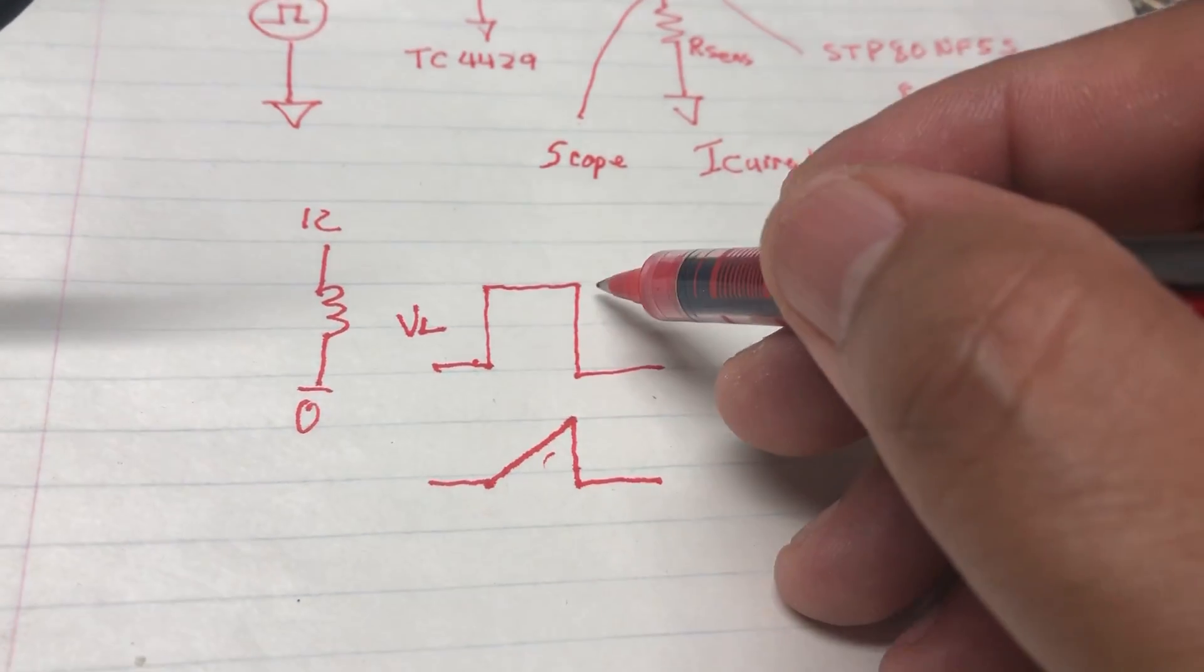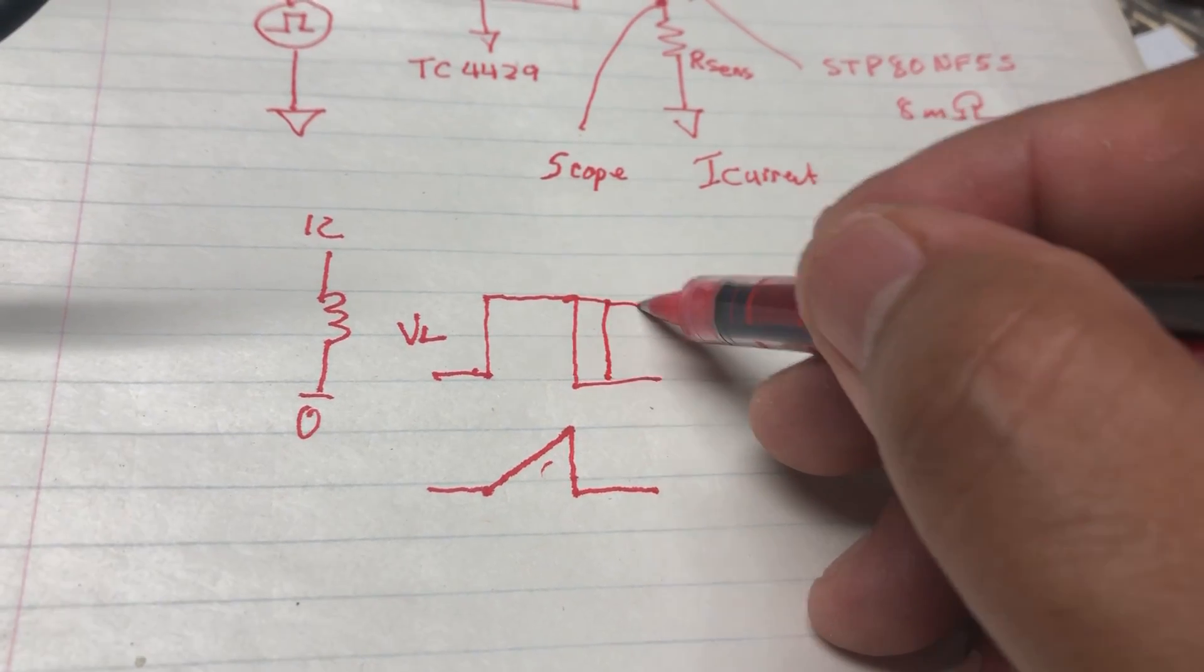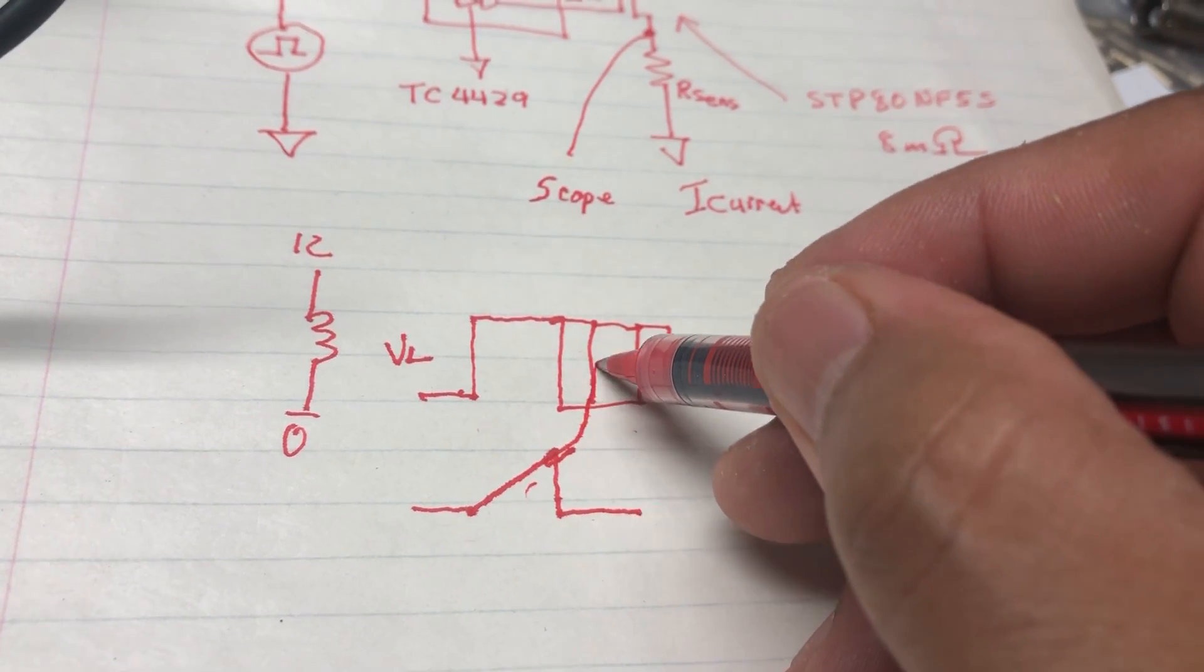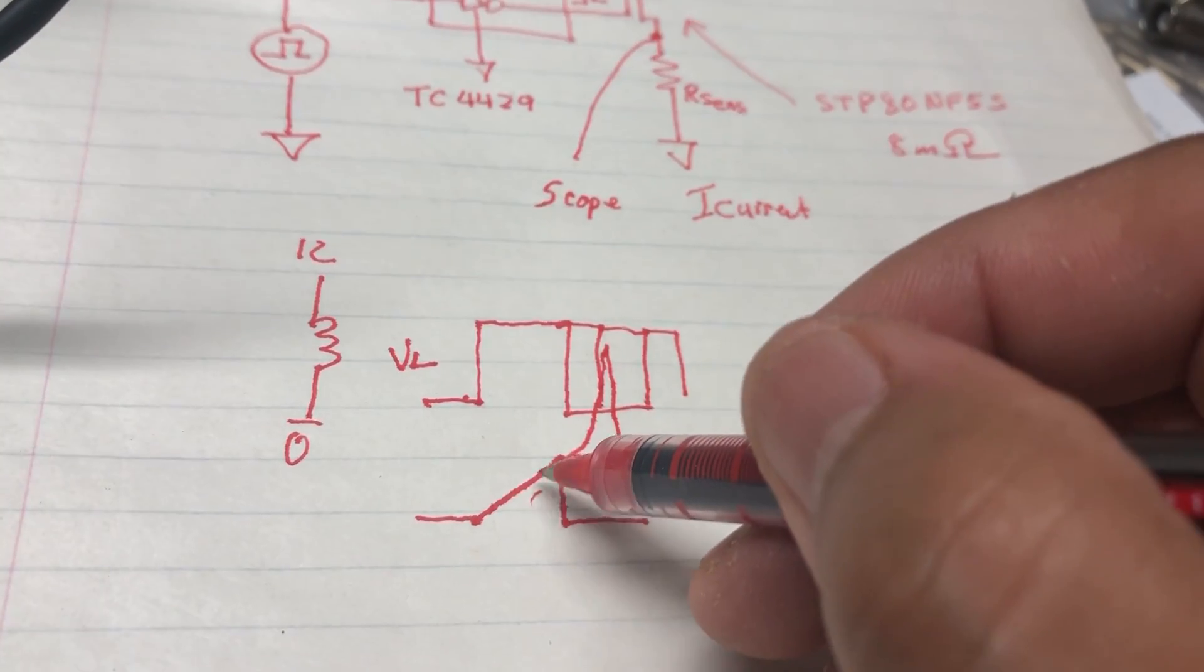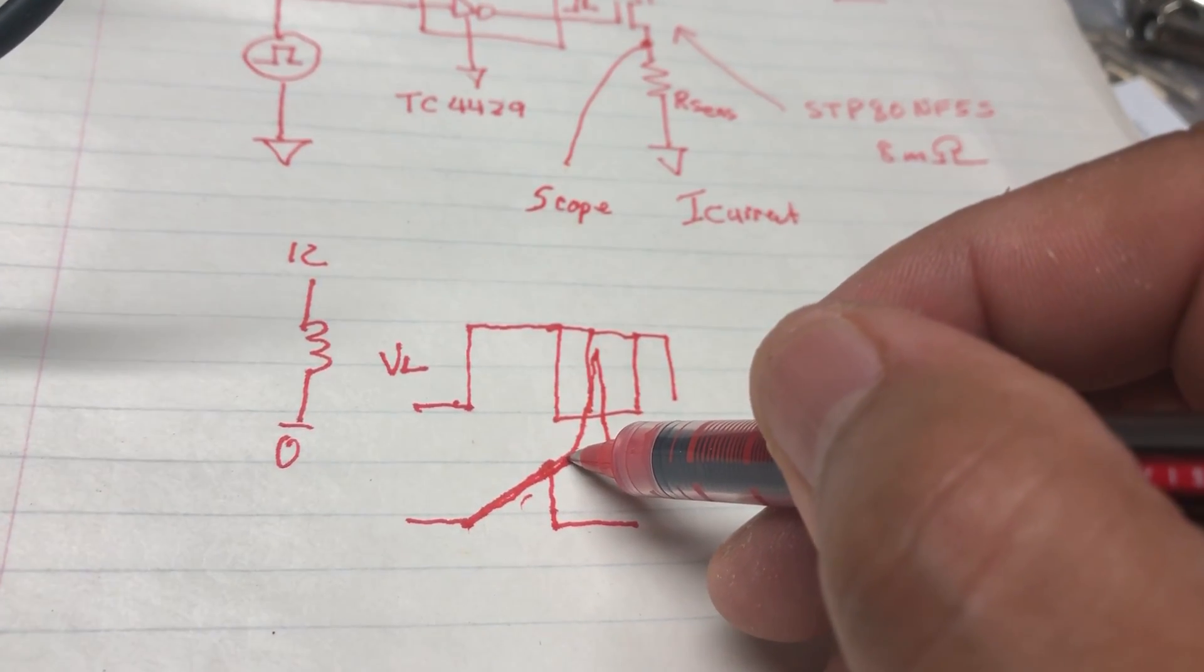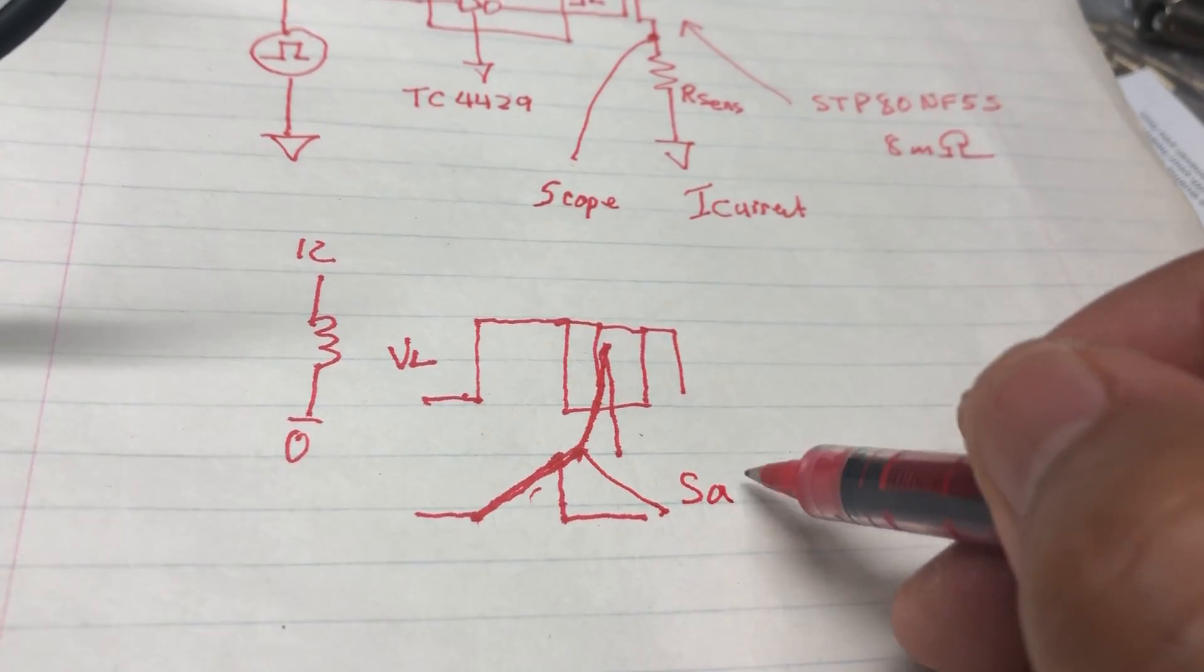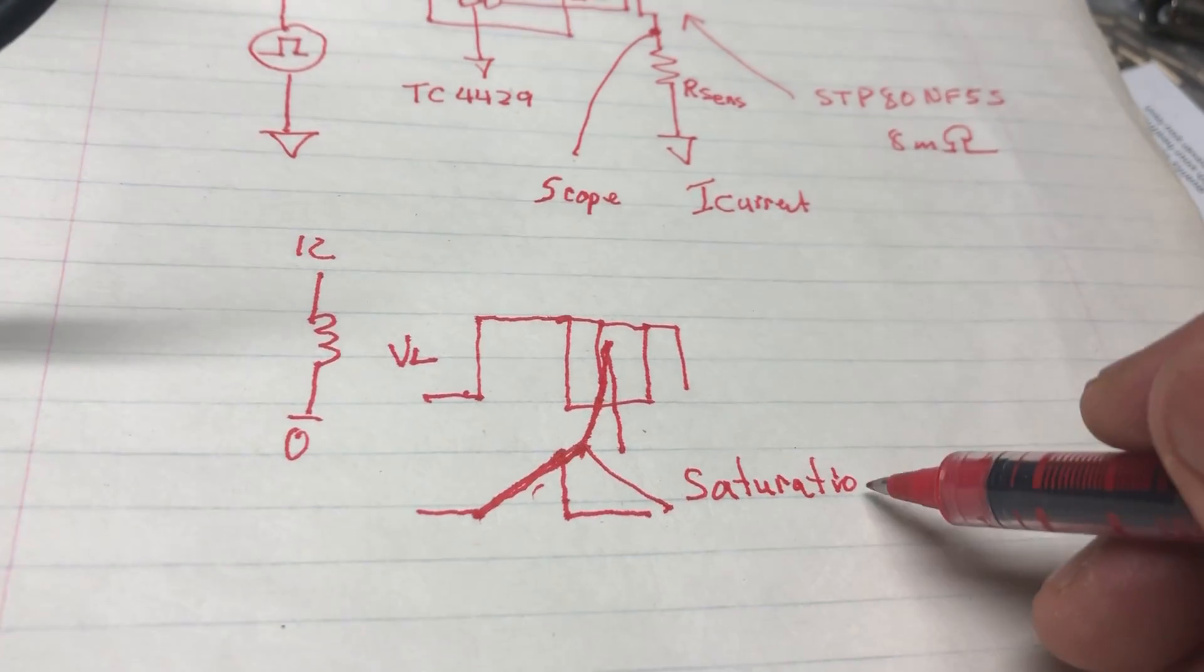As you increase the time width and this gets larger and larger, then you start seeing a little exponential curve. So it stops being linear. This section is linear, but then once you see this deflection, you're at the saturation current.